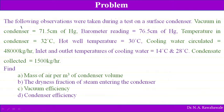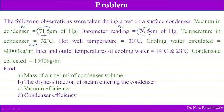Vacuum pressure PV is equal to 71.5 centimeters of Hg. Barometer reading, atmospheric pressure PB, is 76.5 centimeters of Hg. Temperature in the condenser overall is 32 degrees Celsius. Hot well temperature — the condensate collected in a sump — is 30 degrees Celsius.